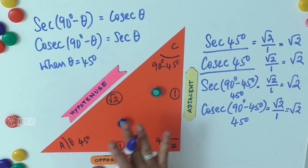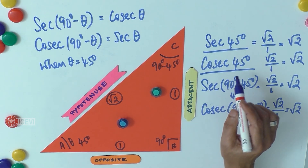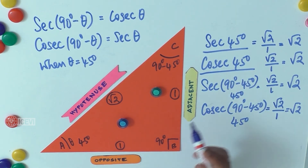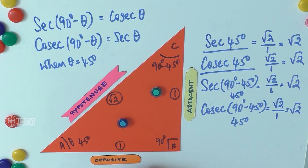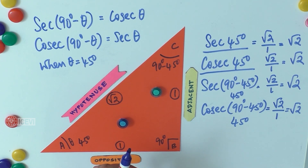When we take 45 degrees, we can demonstrate that sec 45° equals csc 45°. Taking the complementary angle gives the same result, because in the case of 45 degrees the complementary angle is the angle itself. In the earlier example, we used 30 and 60 degrees for complementary angle ratios. Here we specifically use 45 degrees to highlight that the angle and its complementary angle remain the same.